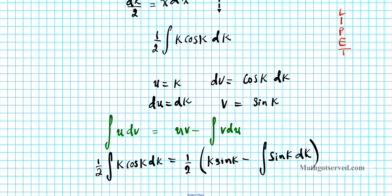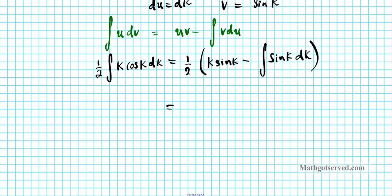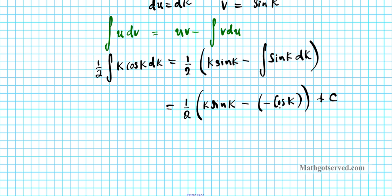Let's simplify. The integral of sine(k) is negative cosine(k), because the derivative of cosine is negative sine. So we have: one-half times k sine(k) minus negative cosine(k) plus C, which simplifies to one-half times the quantity k sine(k) plus cosine(k), plus C.